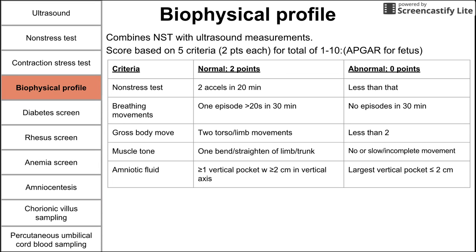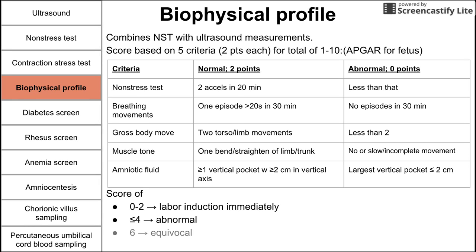You sum these five criteria together, and that score is your biophysical profile. A score of zero to two means you should induce labor immediately. Any score less than four is generally abnormal. A score of six is equivocal, and a score of eight to ten is normal and reassuring.